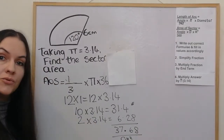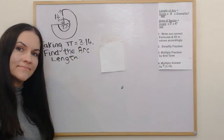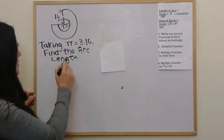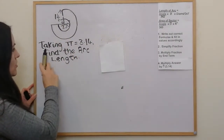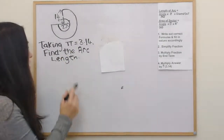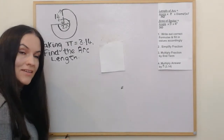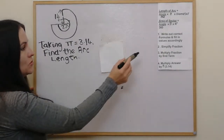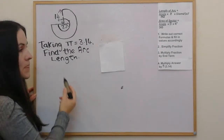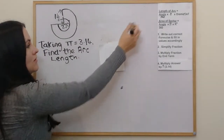That's our final answer. Now for another example. This time we have a new diagram and we're told to take pi as 3.14 and find the arc length. Going through our four-step guide: the first thing is to write out the correct formula and fill in the values. So it's arc length this time — arc length is up there.